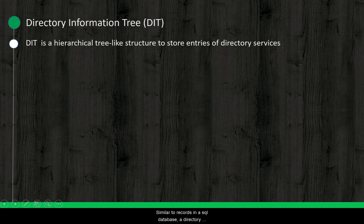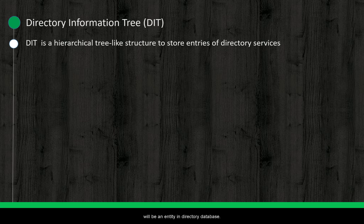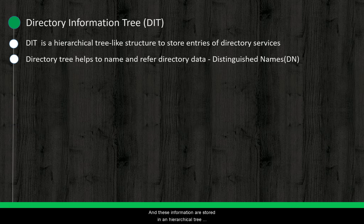Similar to records in a SQL database, a directory database has individual information stored as an entity. If you are maintaining a directory service to store employee details, each employee's details will be an entity in the directory database. These informations are stored in a hierarchical tree-like structure, which makes it easy for a client application to refer and fetch a particular entity.